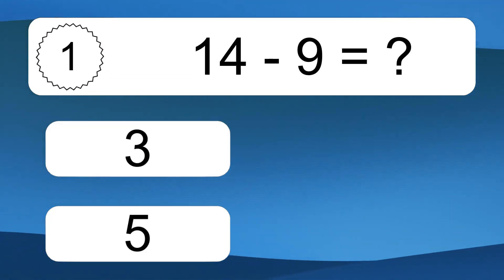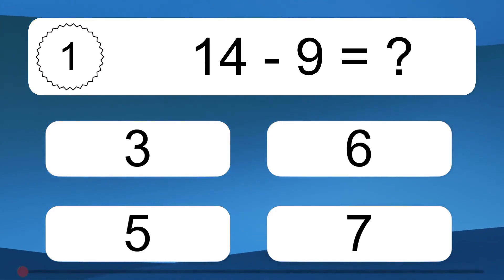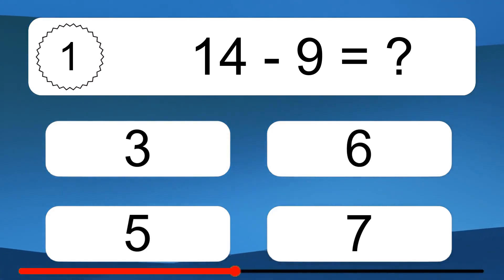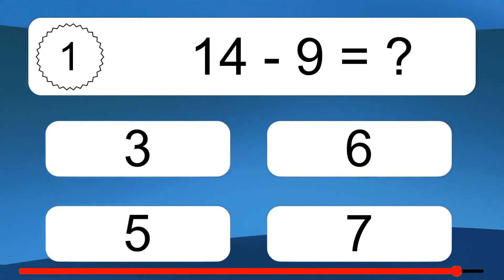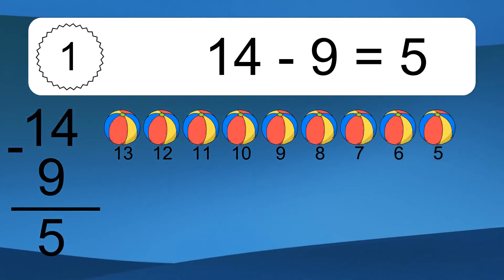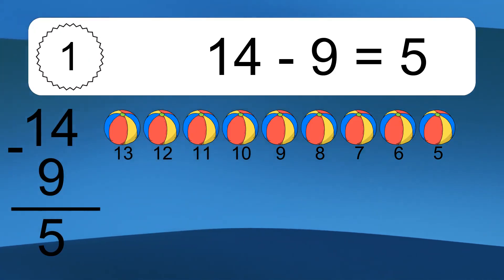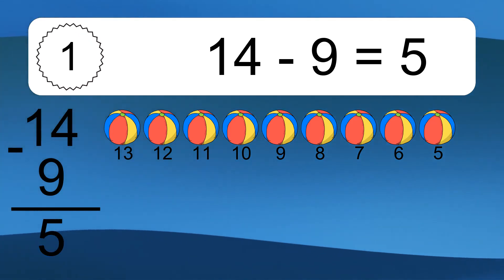14 minus 9 equals what? 14 minus 9 equals 5. Let's count it: 13, 12, 11, 10, 9, 8, 7, 6, 5.